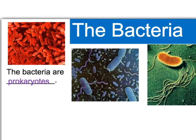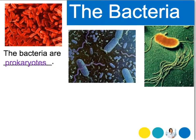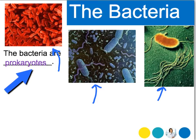Good afternoon. Let's talk bacteria. As we look at bacteria, you'll see here are some examples. They can be many different shapes, and they are in a category that we call prokaryotes. If you remember back from the beginning of the year, a prokaryote is a cell that does not have a nucleus.